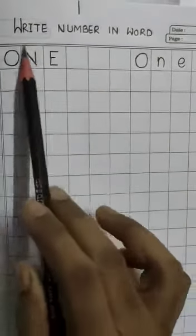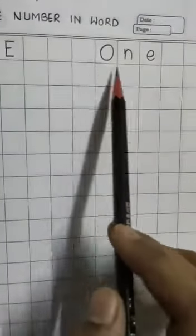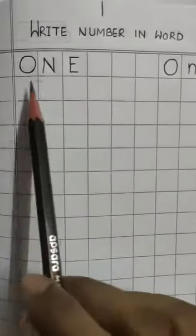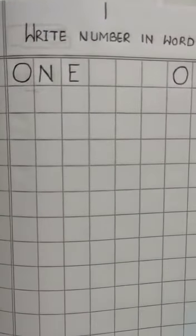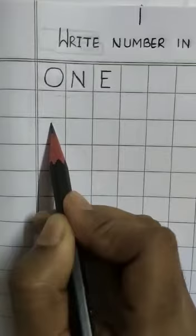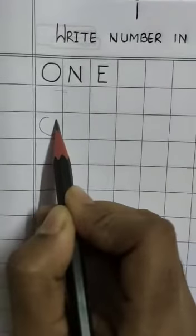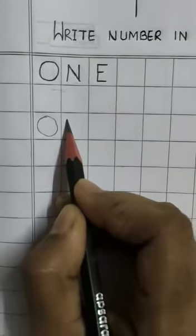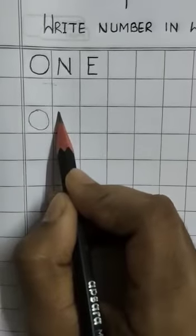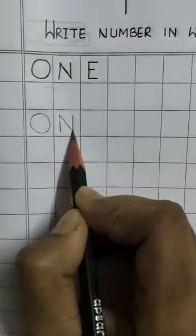Here I have already written number one, and I will tell you in two ways how can you write number one. This is one process and this is another process. So first I will tell you this process. First, O — just a circle. O, just circle. Then N: first a standing line, then a backward slanting line, then another standing line — now N is complete.